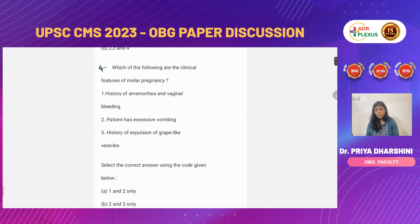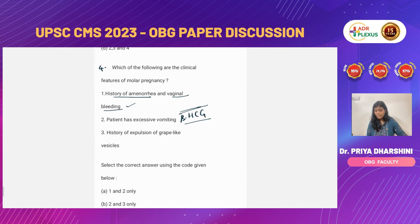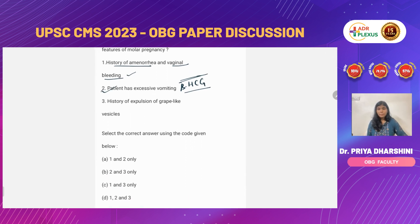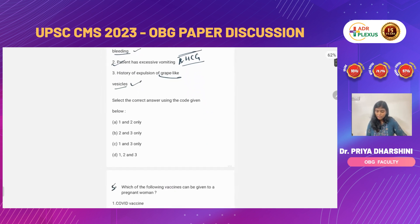Next question: which of the following is a clinical feature of molar pregnancy? In molar pregnancy there will be a history of amenorrhea — correct. The patient might present with bleeding if molar pregnancy is not detected by early trimester scanning. There is also excessive vomiting due to elevated beta-HCG levels, which are increased in molar pregnancy. Expulsion of grape-like vesicles may also occur. So all three options — 1, 2, and 3 — are correct.